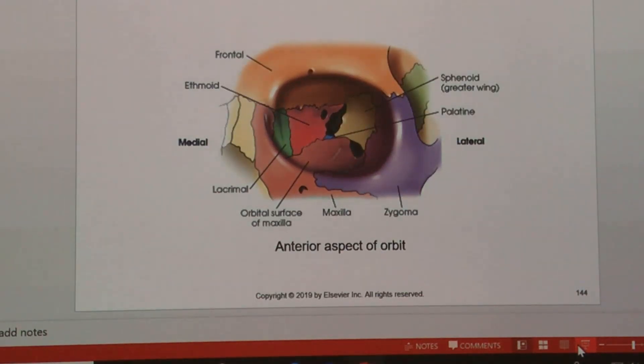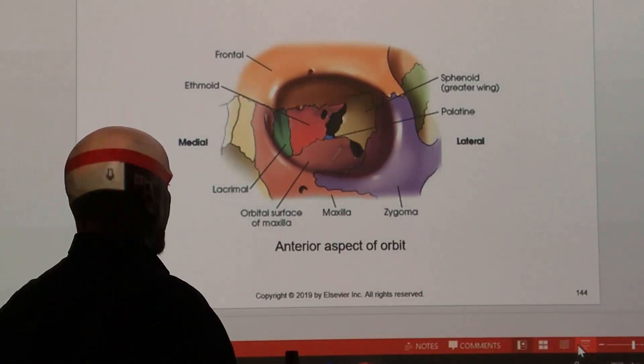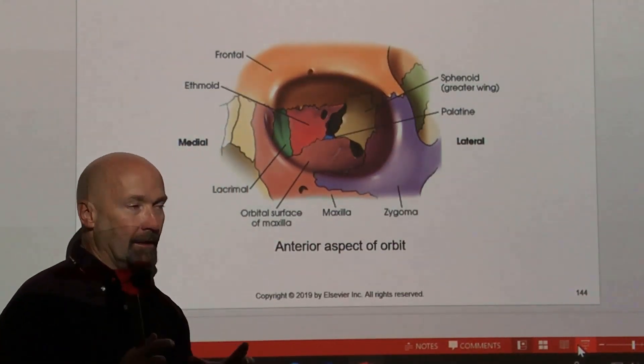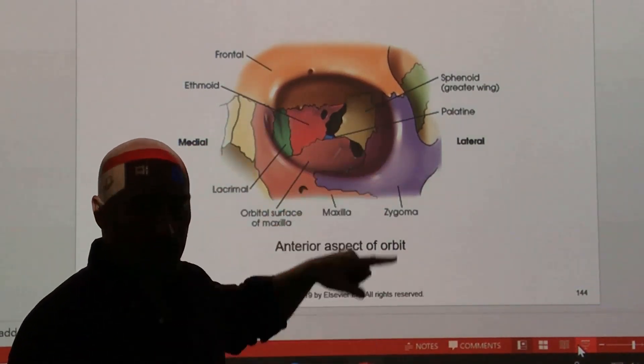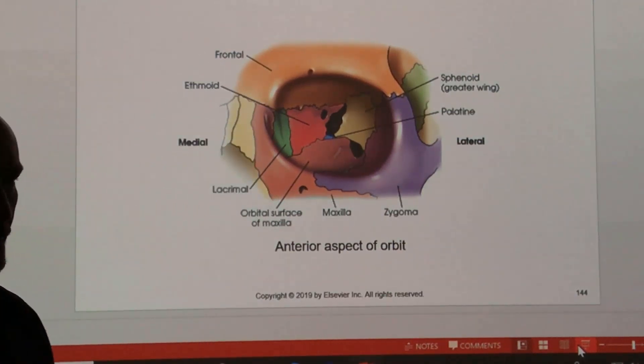Just backing up, the apex of the orbit is cone-shaped. The apex of the orbit is posterior and medial, and that'll play a part and you'll understand why I'll point that out here in a bit.